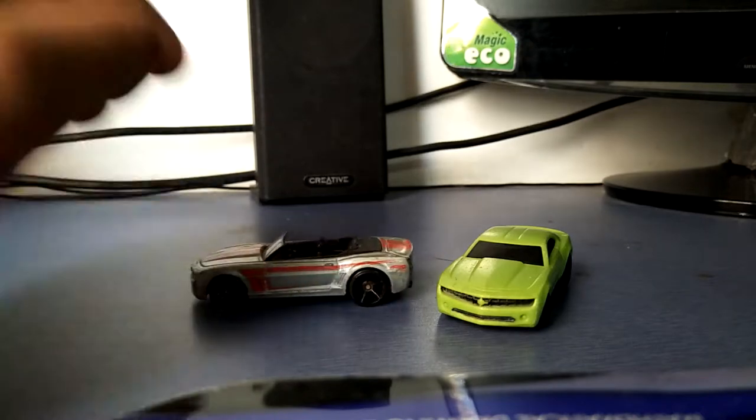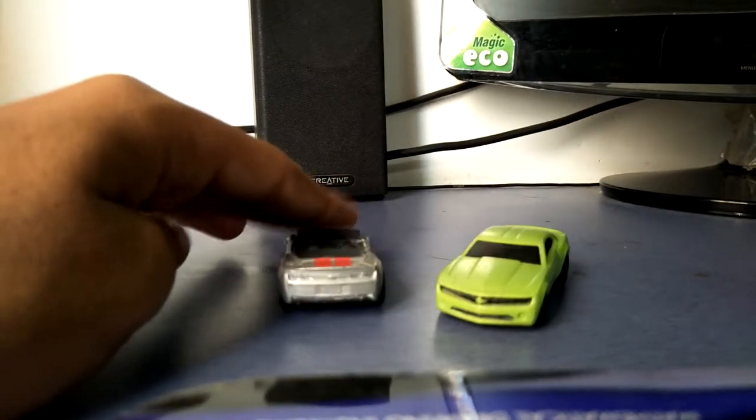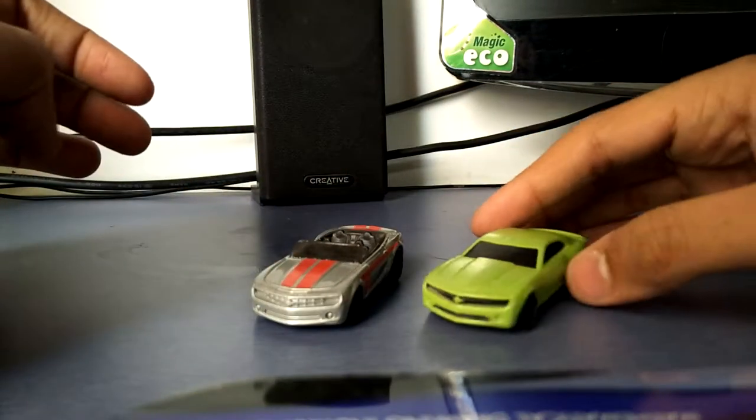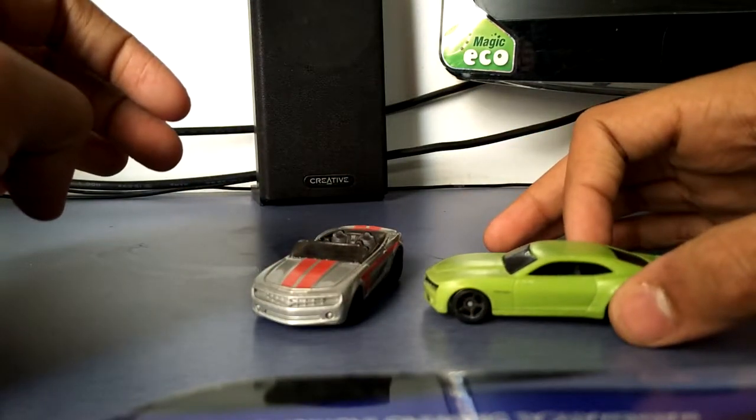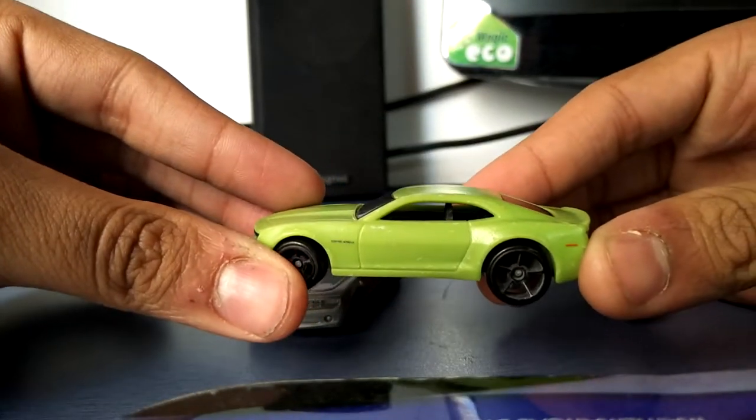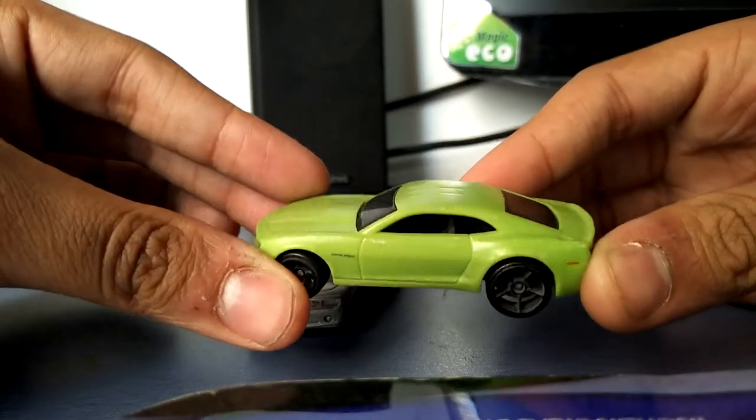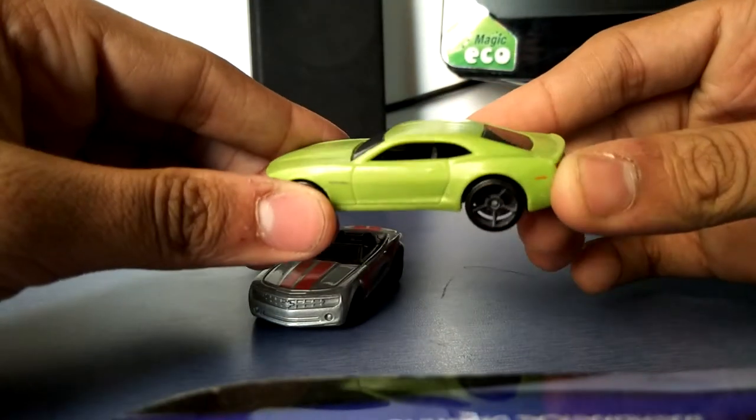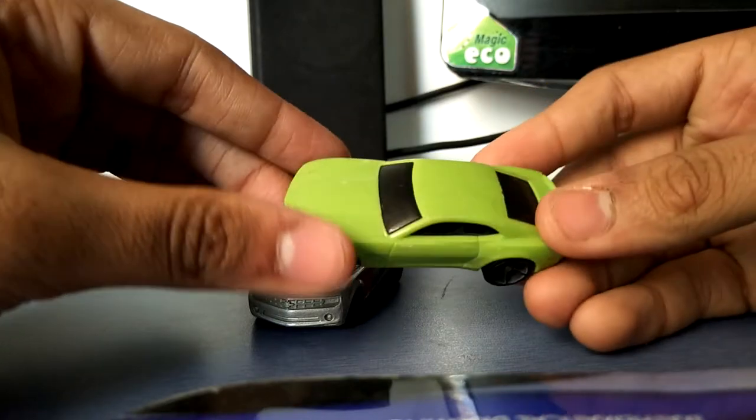As you see, this is the convertible one with a hood, and the other one is the closed non-convertible with a roof. If you see this car, it's beautiful looking. It has a nice paint job, nice glass, and you can see the interior very well.